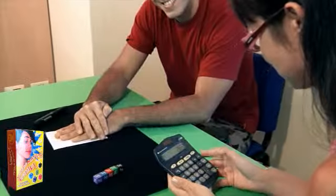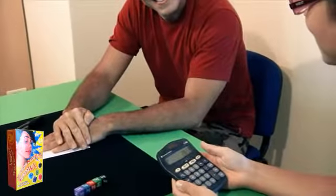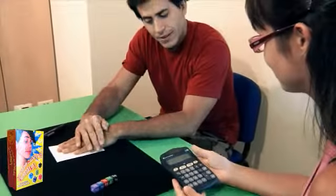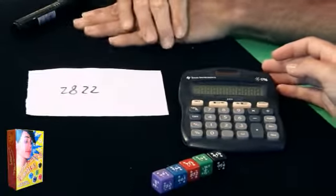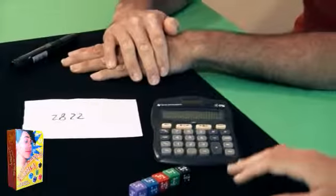Now, what is the sum, the total? 2,822. Okay, perfect. Now, let's see what I wrote. Exactly 2,822. How is it possible?